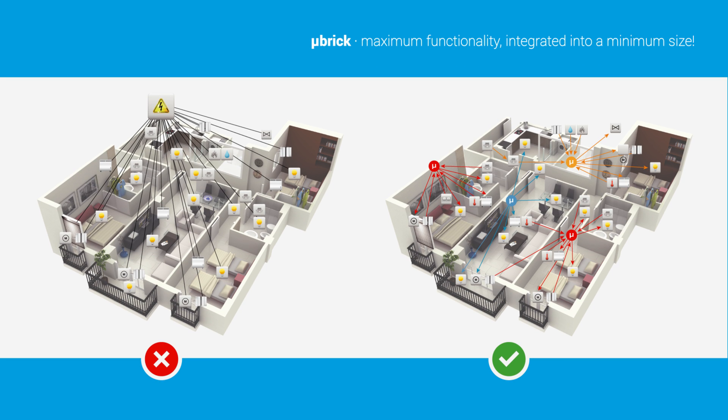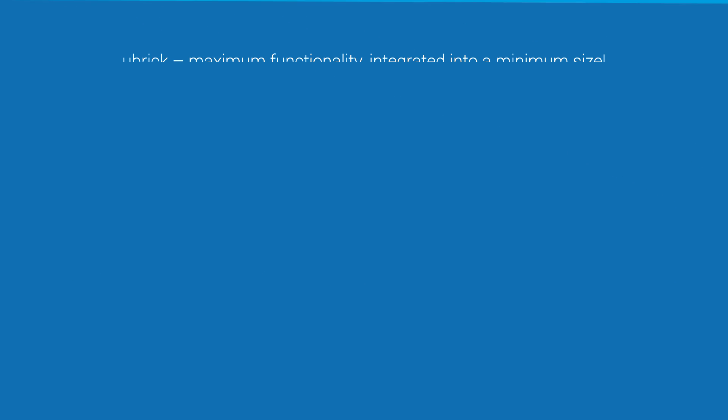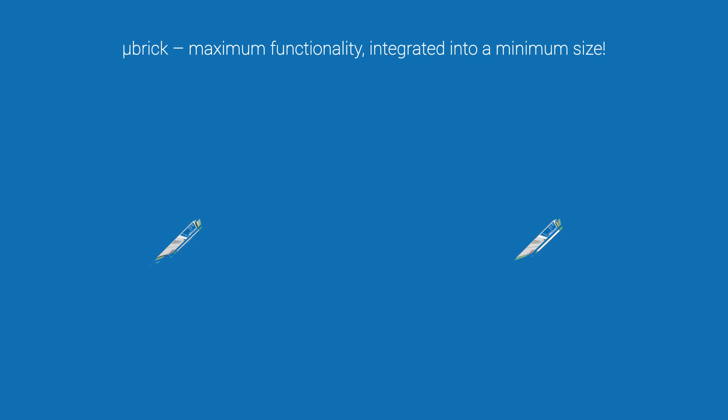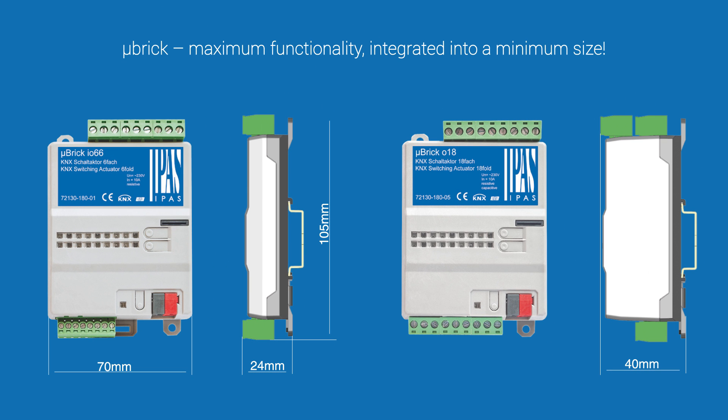Microbric — finally all the advantages of a decentralised installation in KNX. Maximum functionality integrated into a minimum size. DIN rail mounting or screw-on installation — fits everywhere.